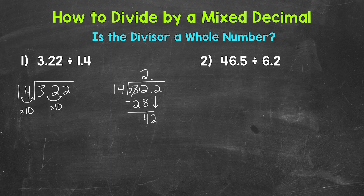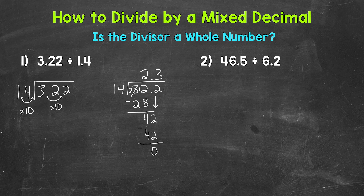Going back to divide: 42 divided by 14. How many whole groups of 14 in 42? That's 3, which hits 42 exactly. Multiply: 3 times 14 is 42. Subtract: 42 minus 42 is 0. We went all the way to the right within our dividend and have a clean cut zero at the end, so we are done. Our final answer is 2 and 3 tenths.